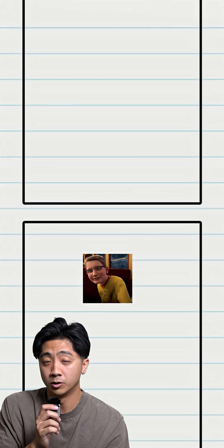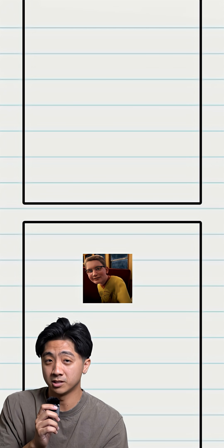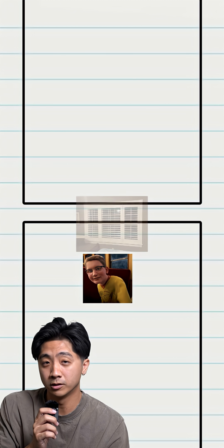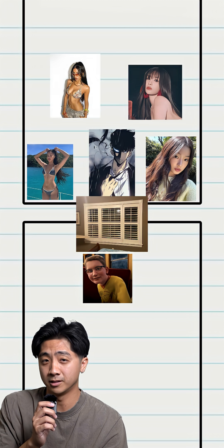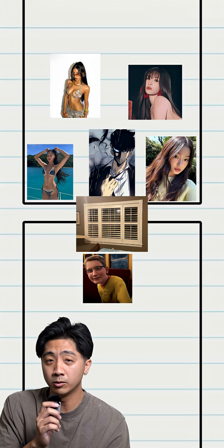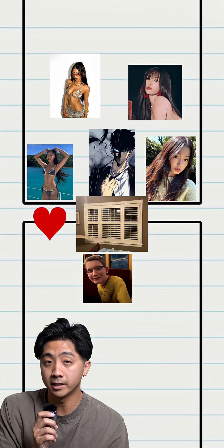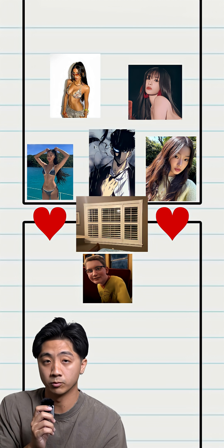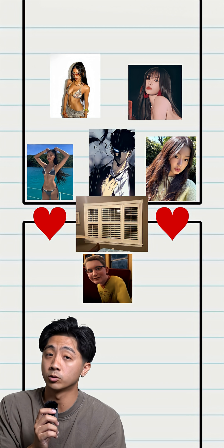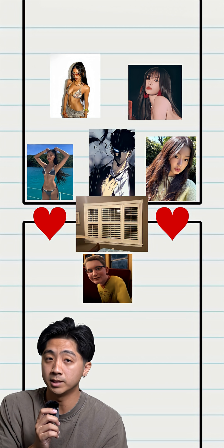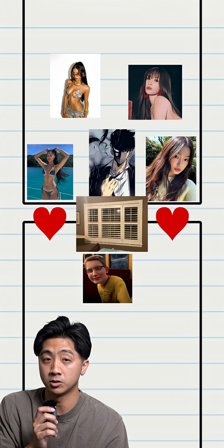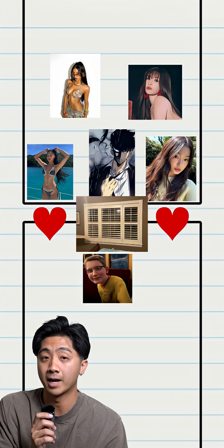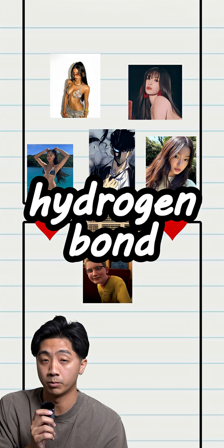Now, if there were two rooms next to each other, the normies with no bitches in one room will look through the window and see all the baddies on the other side, and low-key wish they were over there. This creates a slight attraction between the rooms, but since the doors are locked, the normies can't leave. The attraction between the two rooms is known as a hydrogen bond.